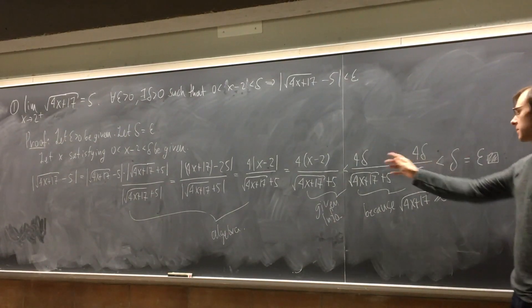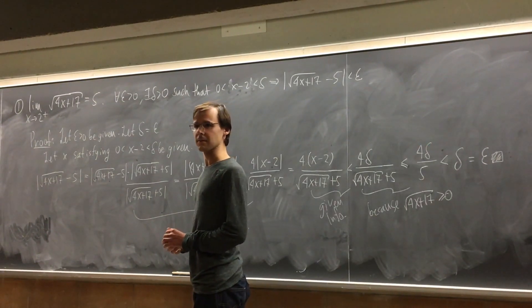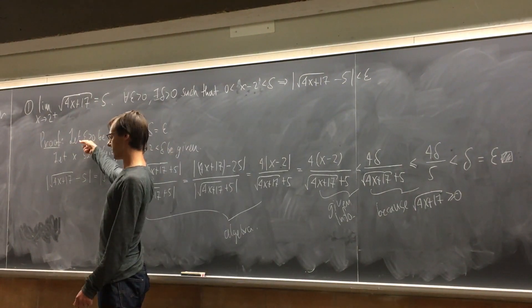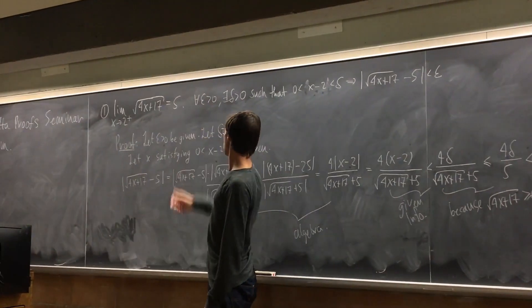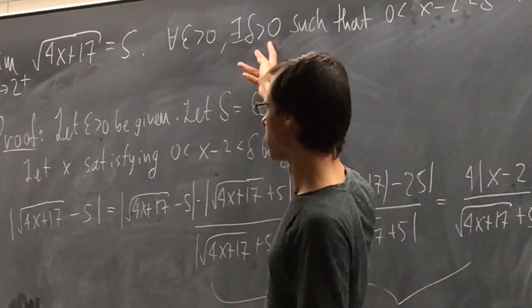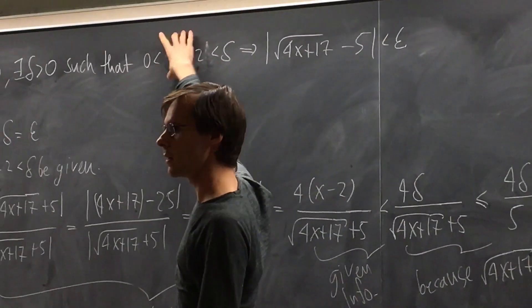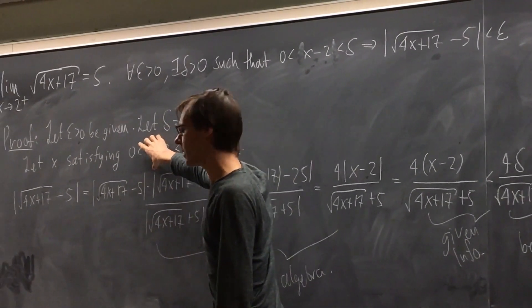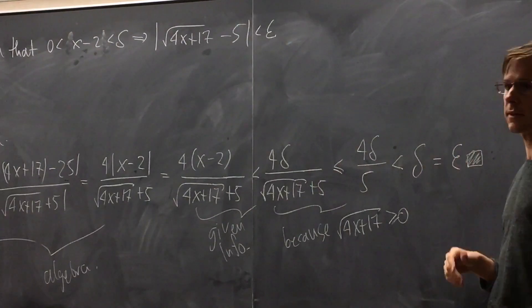This proof works. We have found a delta which works for any given epsilon. Epsilon greater than zero starts out being given; we find a specific delta equal to epsilon; we show there exists a delta such that this implication holds — meaning for all x which satisfy the first inequality, x will satisfy the conclusion as well. Our choice of delta comes in right at the end.